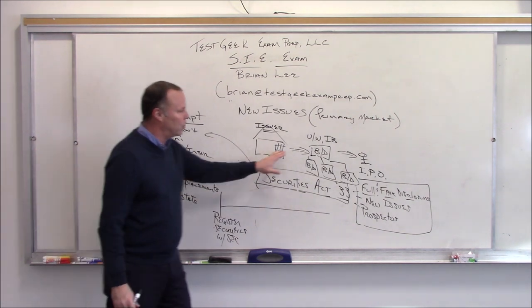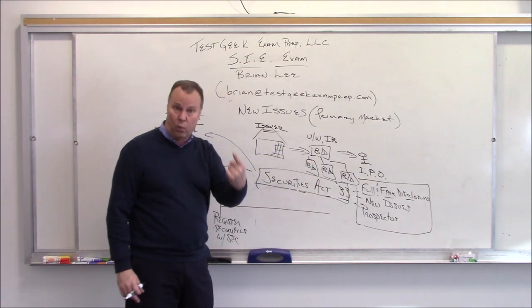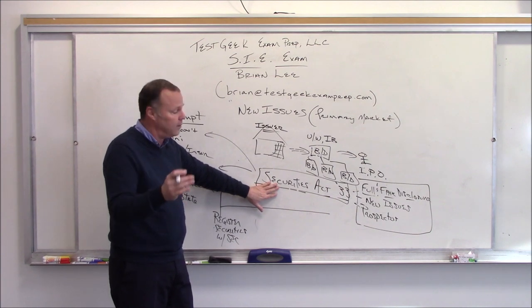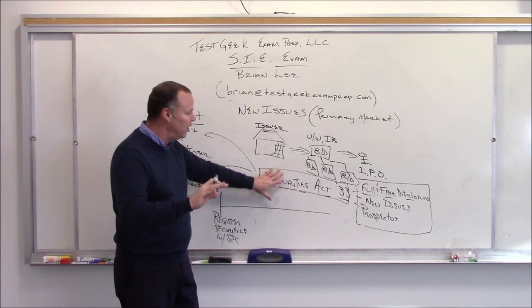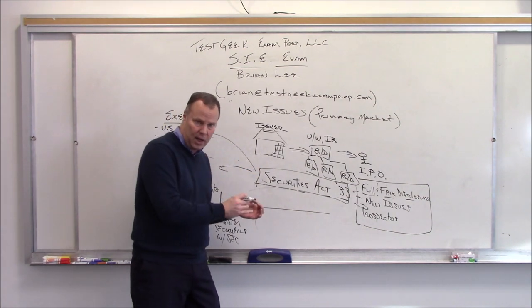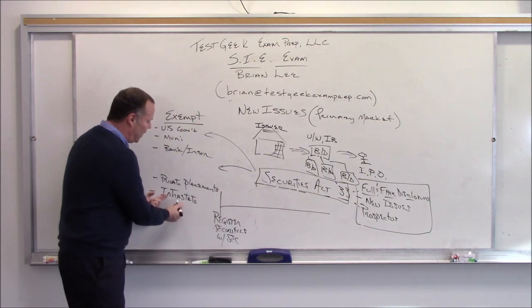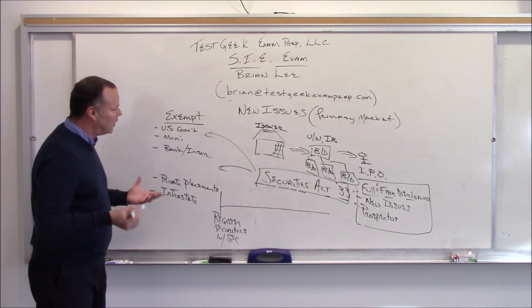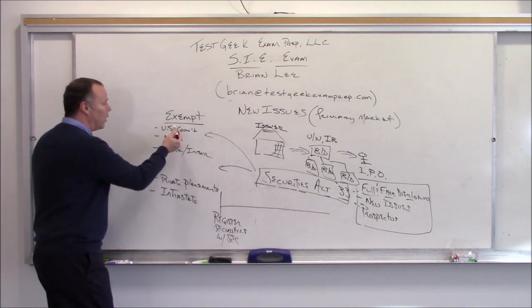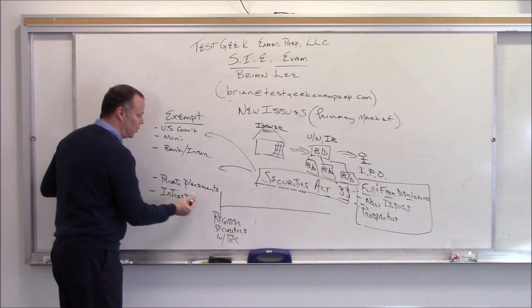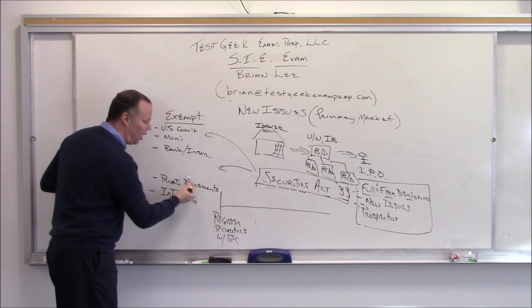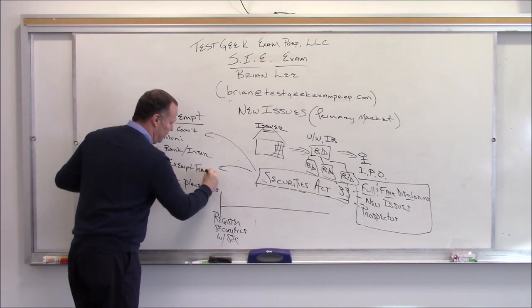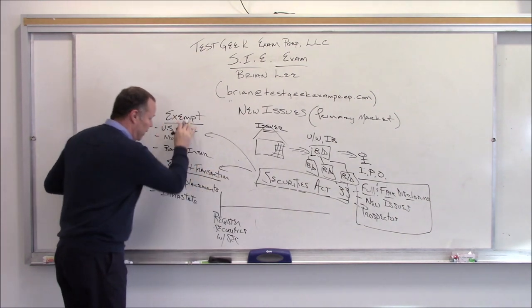And then we have some other exceptions, what we call intrastate offerings. Notice, these are when the securities are only issued in one state. And as far as the federal government is concerned, as long as it doesn't cross state boundaries, the feds really don't deal with it, only the state does. So this also is exempted from the 33 Act. Now, what does that truly mean? Whether the security, the issuer is exempt, or the type of offering, what we call an exempt transaction.